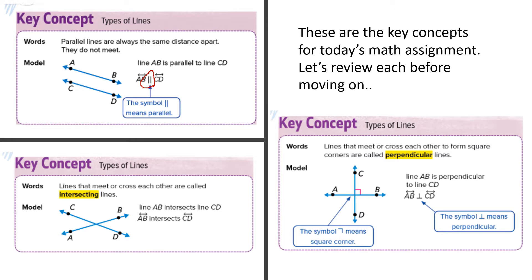The second key concept is intersecting lines. What we just talked about on the previous slide. When the lines cross each other, they're called intersecting. And then finally, we have perpendicular lines. They are lines that actually intersect, but they intersect in such a way that they form a square corner. Do you see that right here? And this is the symbol that you would put between them. Line AB is perpendicular to line CD.